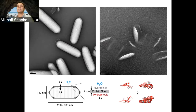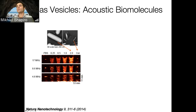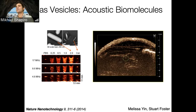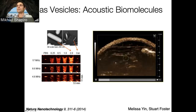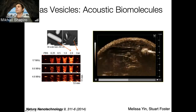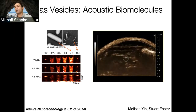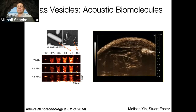We looked at these and said: they're filled with air, so maybe they'll scatter sound waves — and indeed that turned out to be true. In our earliest experiments, we took purified gas vesicles from cyanobacteria, put them into acoustically transparent hydrogels at different concentrations in the picomolar range, and saw very nice ultrasound contrast at a bunch of relevant ultrasound frequencies. We then injected them into a mouse tail vein and imaged the liver. Over time, you see the liver going from dark to bright and filled with ultrasound contrast — to our knowledge, the first time a biomolecule could be seen with ultrasound inside a living, breathing animal.